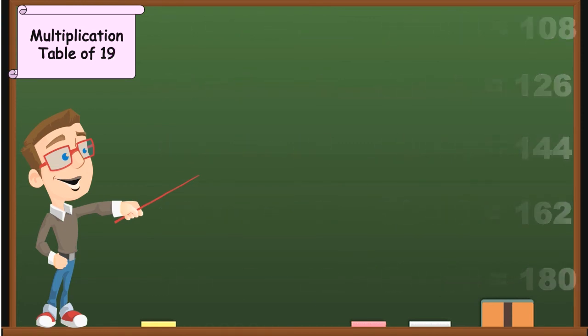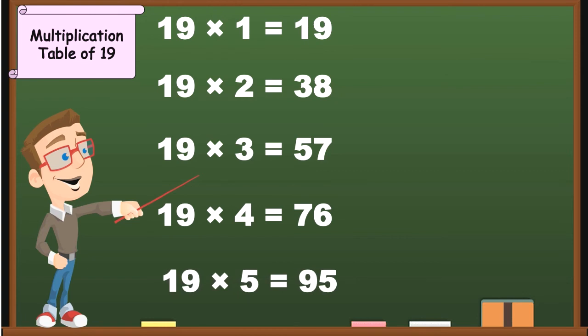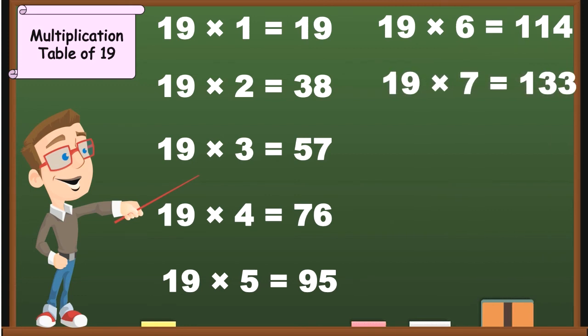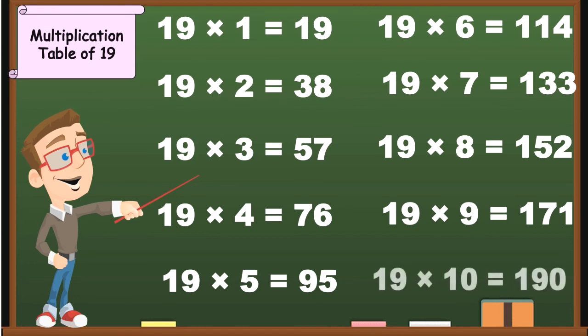19 1's are 19, 19 2's are 38, 19 3's are 57, 19 4's are 76, 19 5's are 95, 19 6's are 114, 19 7's are 133, 19 8's are 152, 19 9's are 171, 19 10's are 190.